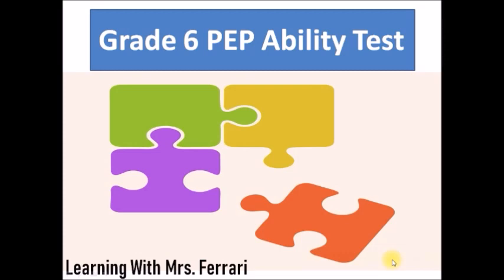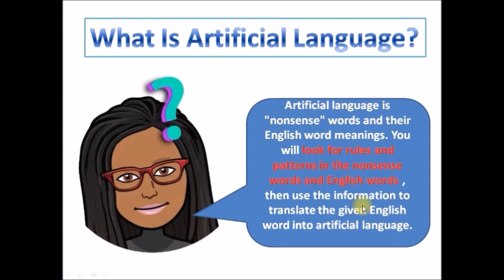Hi grade 6 boys and girls. Today we continue to look at the grade 6 preparability test, and the category of questions we are looking at today is artificial language. Artificial language is nonsense words and their English word meanings. When we talk about nonsense words, we are talking about a group of letters that come together but they make absolutely no sense, and they give you the meaning of that nonsense word in English. The key thing is to look for rules and patterns in the nonsense words and the given English words, then use that information to translate the given English word into an artificial language.